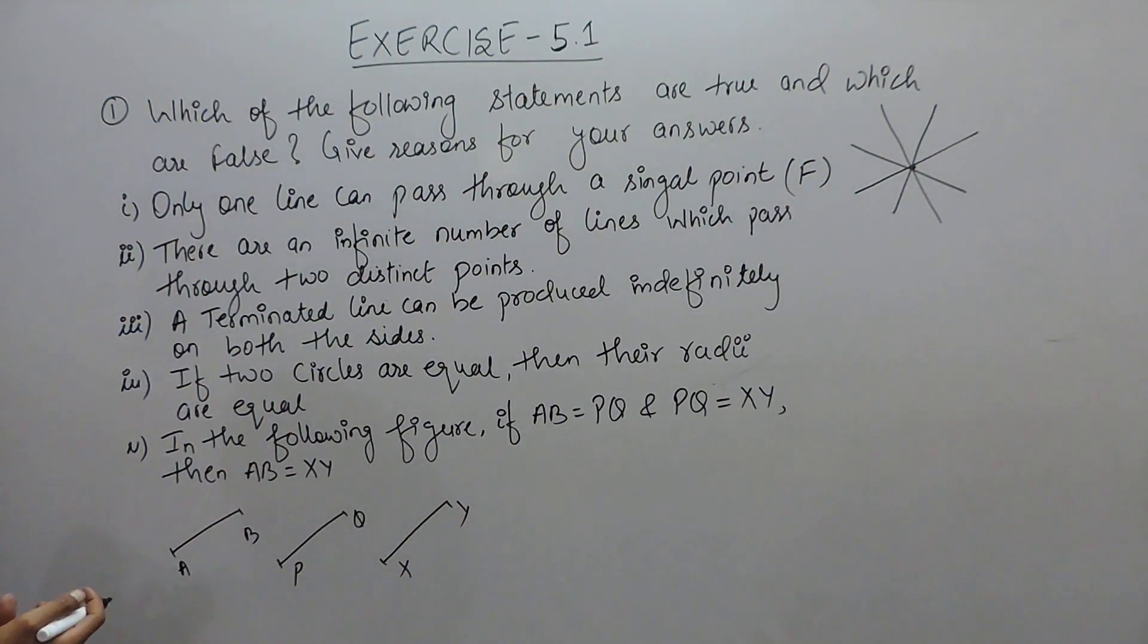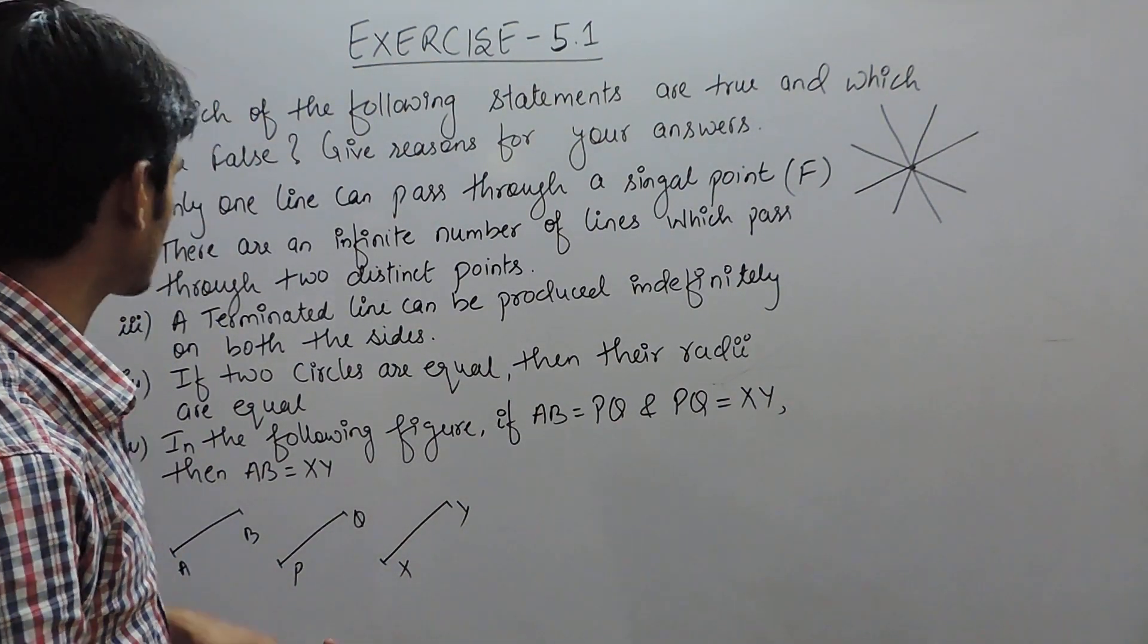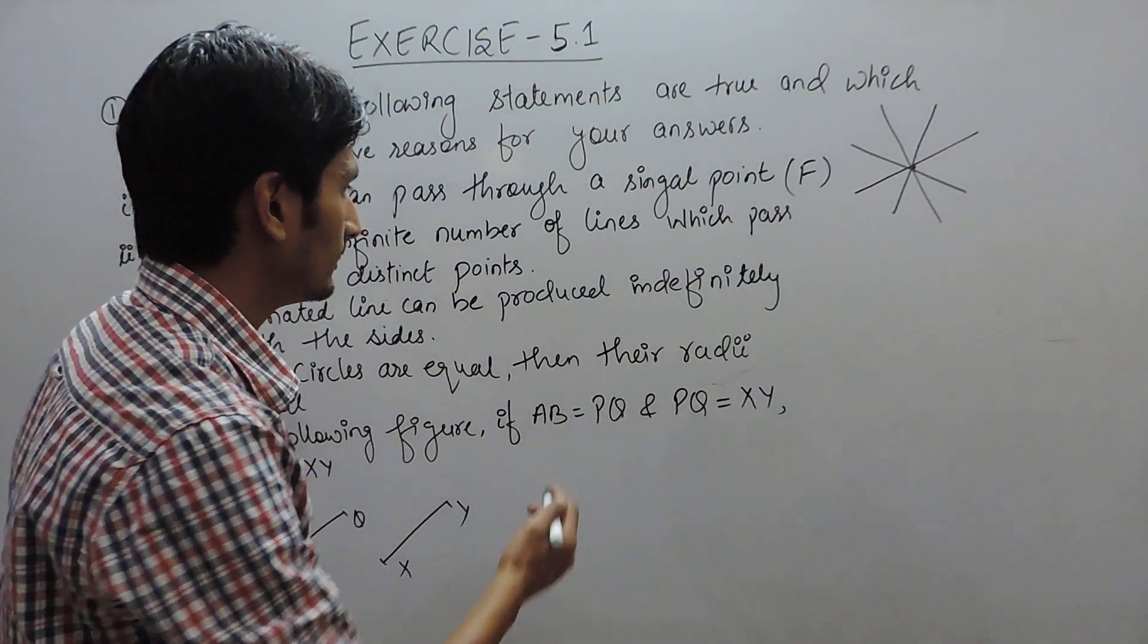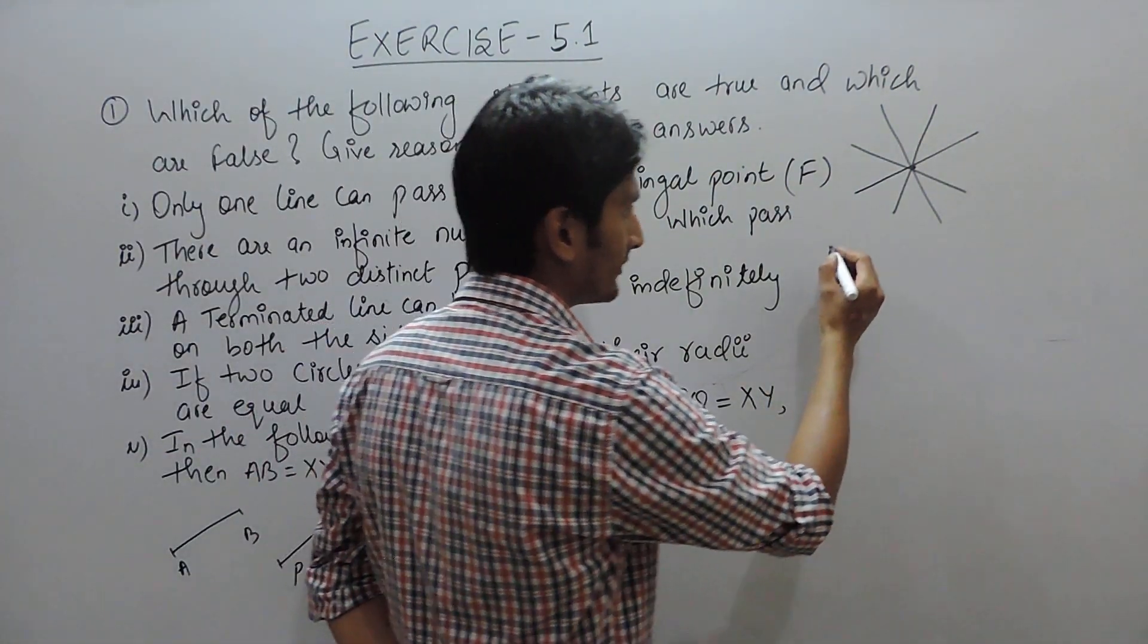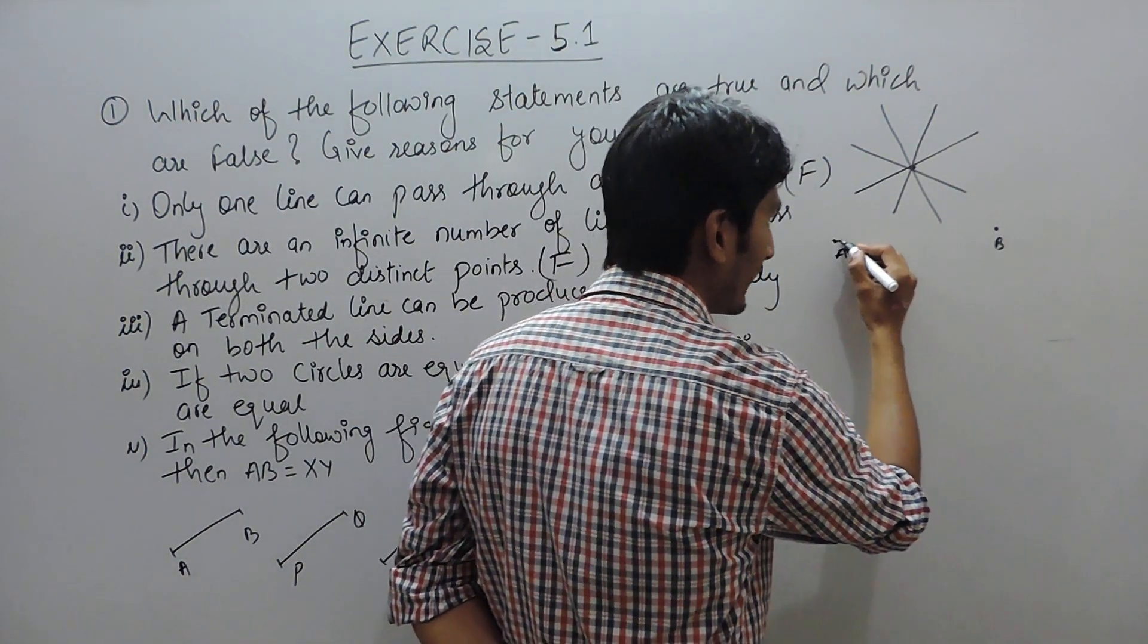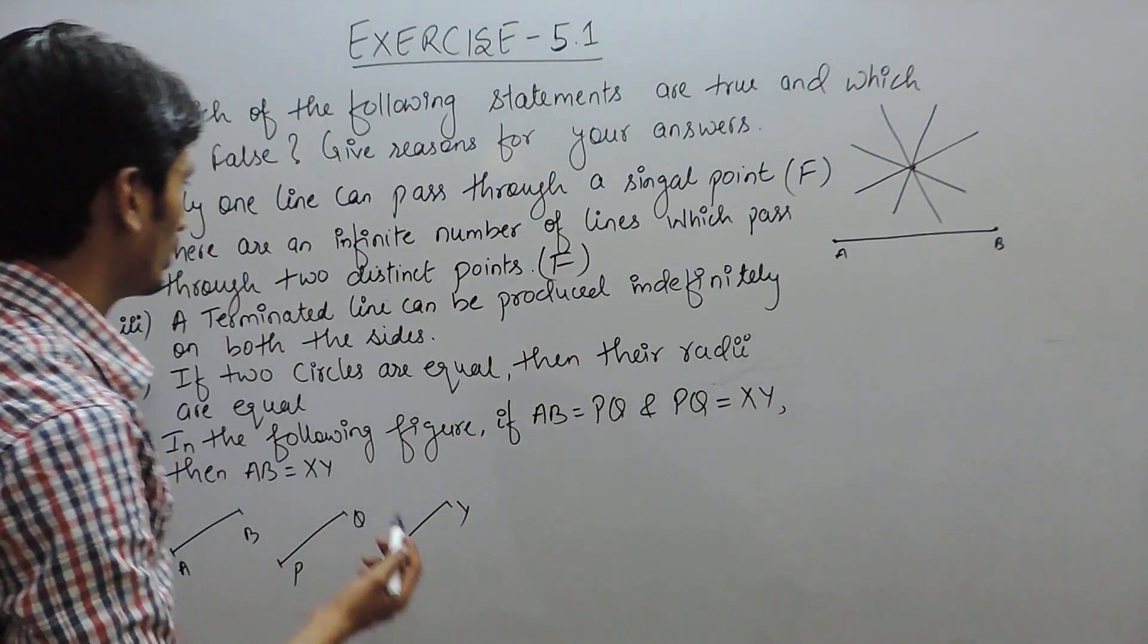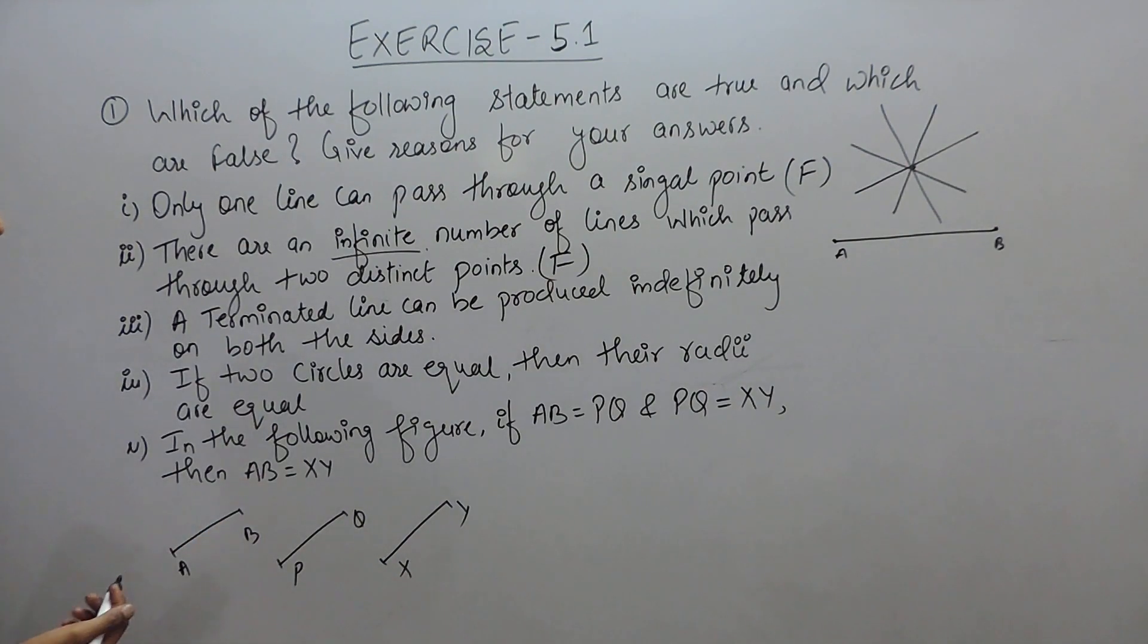Second statement is there are an infinite number of lines which pass through two distinct points. Again this is false because if there are two points A and B, only one line can pass through these two points. So again this is wrong because here it is given infinite number of lines.